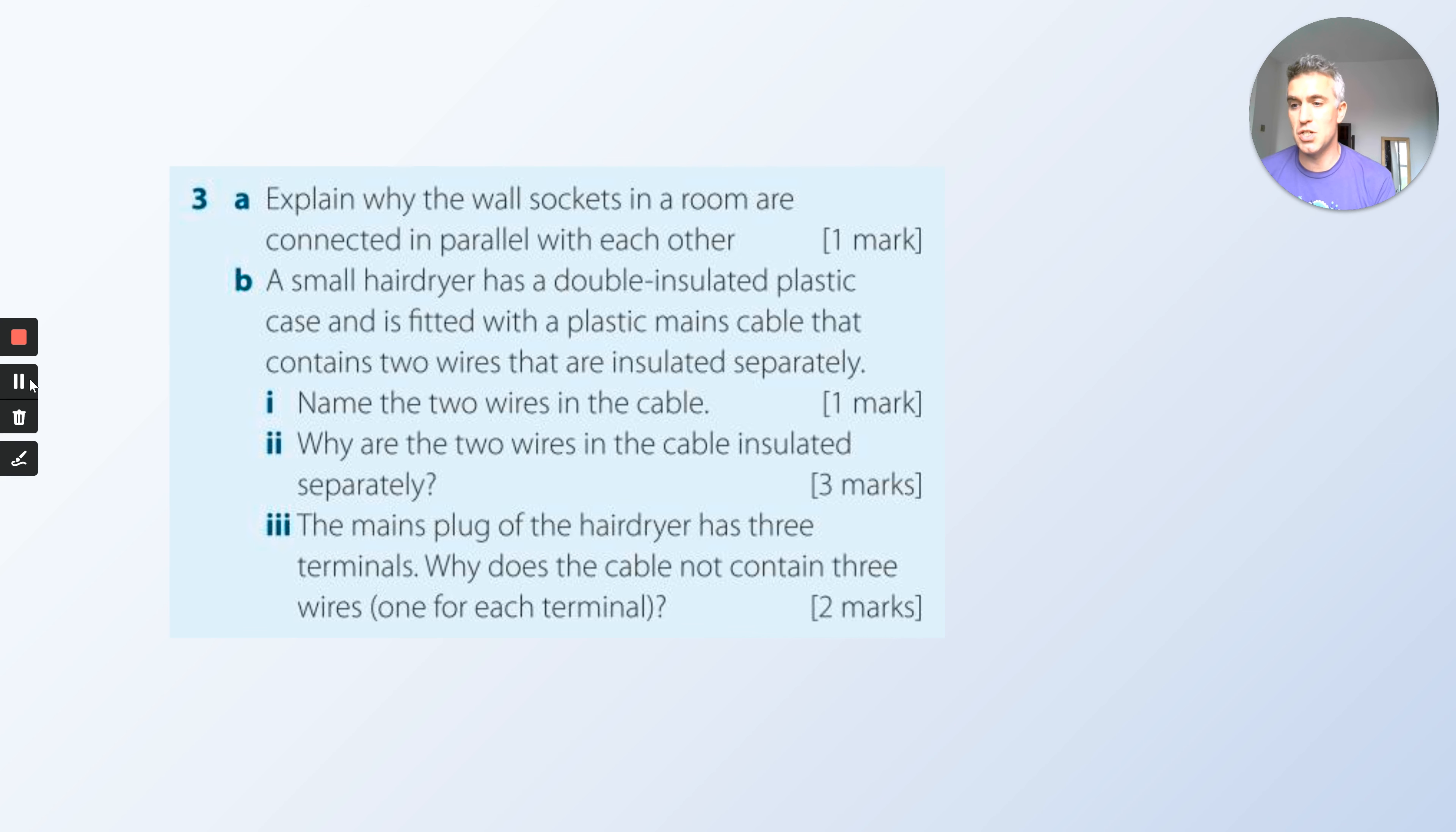A small hair dryer has a double insulated plastic case and is fitted with a plastic mains cable that contains two wires that are insulated separately. Name the two wires in the cable. Why are the two wires in the cable insulated separately?